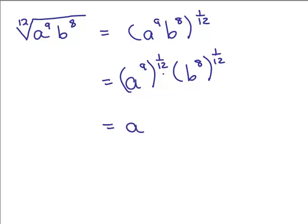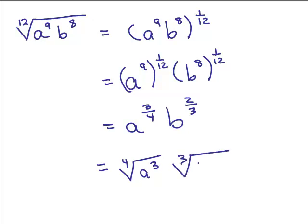So what's that get me? a to the, well we've got 9 twelfths, that reduces to 3 fourths, and b 8 twelfths, that reduces to 2 thirds. So we could write this as a to the 3 fourths, b to the 2 thirds, or you could put that back into radical form, which would be the 4th root of a cubed times the cube root of b squared. Both of these are correct, one is in exponential form, and one is in radical form.